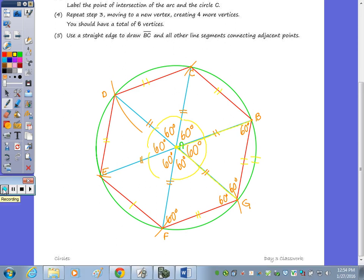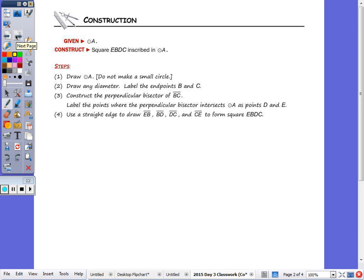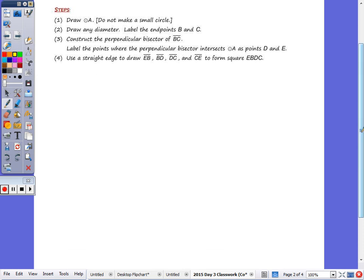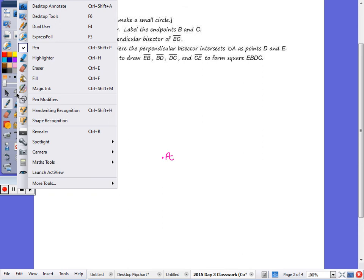Now let's move on to the square. So to construct a square that is inscribed in circle A, we're going to start by drawing a circle again. So I'm going to mark where my center is going to be. So let's use pink here, circle A. Take your compass, draw circle A.